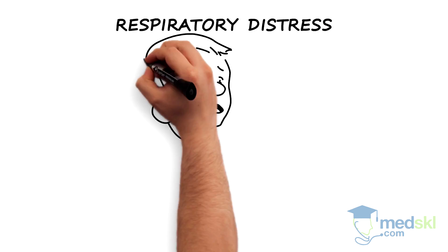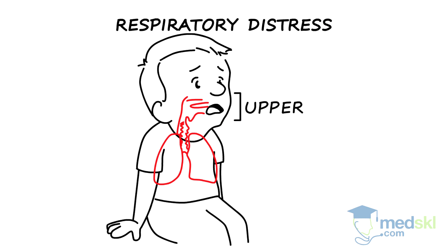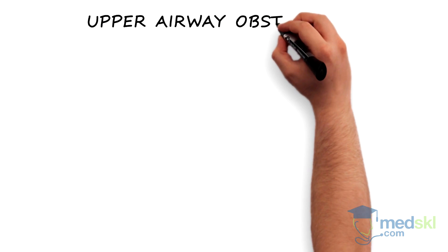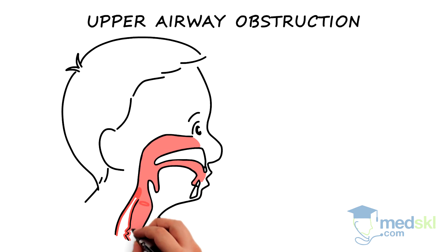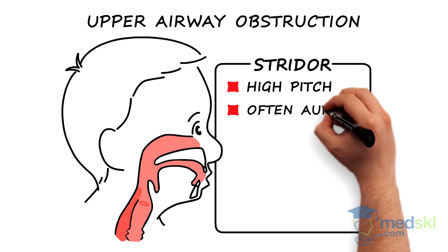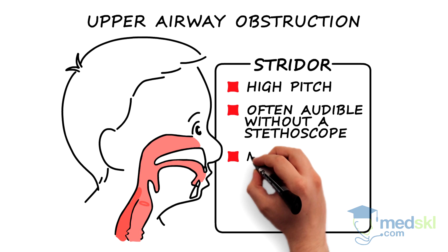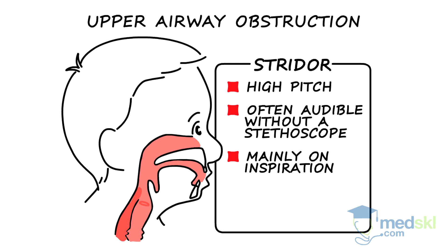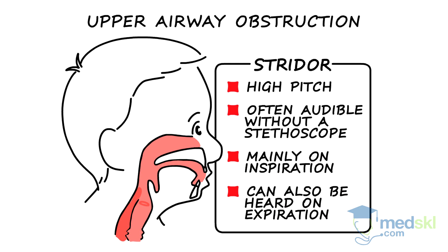Respiratory distress in children is caused by either upper or lower airway diseases. Upper airway obstruction is recognized by the presence of stridor, a high-pitched sound often audible without a stethoscope, mainly on inspiration but can also be heard on expiration.